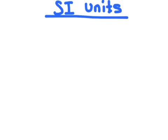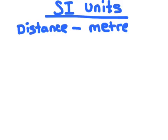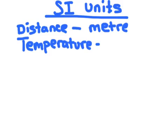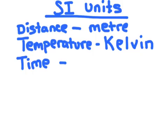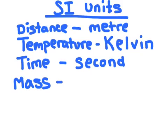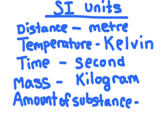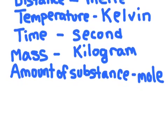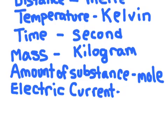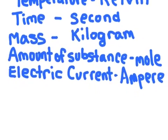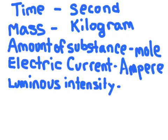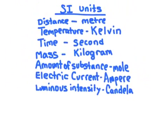For measuring distance, the standard unit is the meter. For measuring temperature, the standard unit is the kelvin. For measuring time, the standard unit is the second. For measuring mass, the standard unit is the kilogram. For measuring the amount of substance, the standard unit is the mole. For measuring electric current, the standard unit is the ampere. And for measuring luminous intensity, the standard unit is the candela. These are the seven SI units.